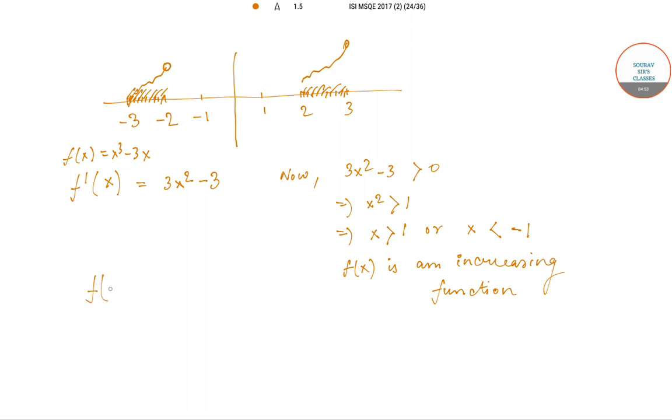So f(-2) is equal to -8 plus 6, which is equal to -2. And f(3) is equal to 27 minus 9, which is equal to 18.